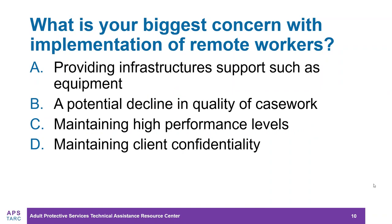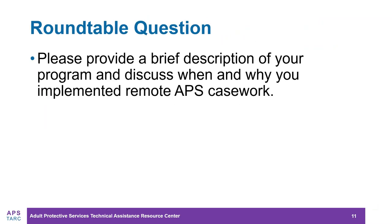The first section of questions deals with context and is focused on the why and how of implementing remote casework. The first question is: please provide a brief description of your program and discuss when and why you implemented remote casework. We will start at the county level and ask Achilles to go first. This is Achilles. Our program — we call it a mobile work program in San Francisco for APS workers, and partial telecommuting for the APS supervisors.